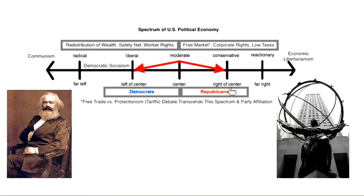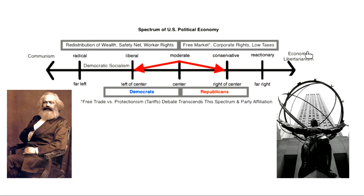Today we tend to associate the right with Republicans and the left with Democrats. Further left you get into Democratic Socialism, which can be a sticky concept because sometimes people use socialism synonymously with communism on the far left. The key difference with Democratic Socialism is that there's voting — people vote for things like health care and government-funded education, the way you see in Western Europe, Japan, Australia, and many places in the developed world today.